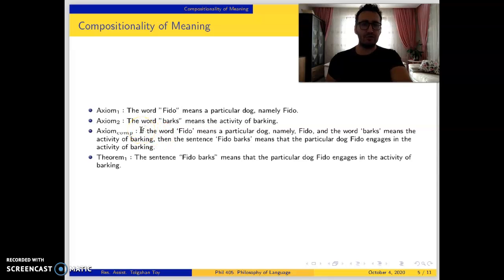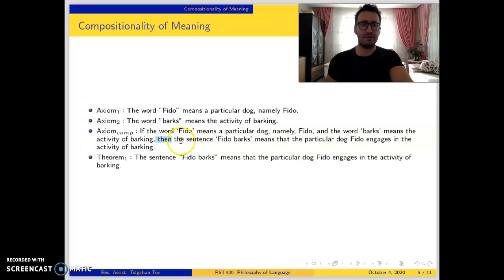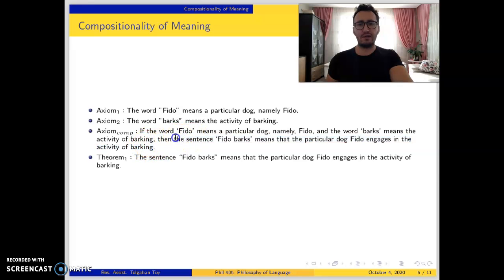The compositionality axiom says: if the word 'widow' means a particular dog, namely Widow — that is the first axiom — and the word 'barks' means the activity of barking — the second axiom — then the sentence 'Widow barks' means that the particular dog engages in the activity of barking. So once we have these two axioms, we have the theorem: the sentence 'Widow barks' means that the particular dog Widow engages in the activity of barking.